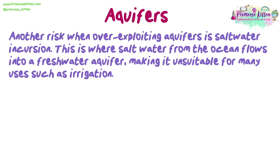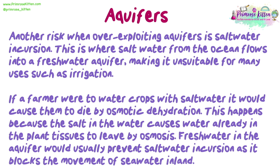Another risk when over-exploiting aquifers is saltwater incursion. This is where saltwater from the oceans flows into a freshwater aquifer, making it unsuitable for many uses such as irrigation. If a farmer were to water crops with saltwater, it would cause them to die by osmotic dehydration. This happens because the salt in the water causes water already in the plant tissues to leave by osmosis. Fresh water in the aquifer would usually prevent saltwater incursion as it blocks the movement of seawater inland.